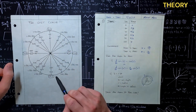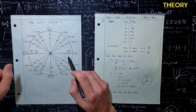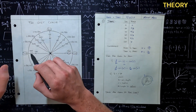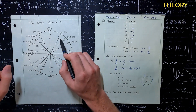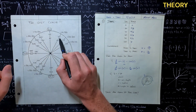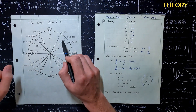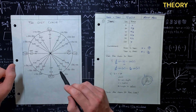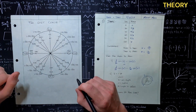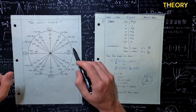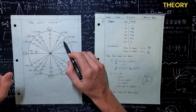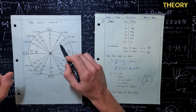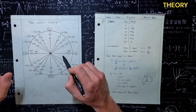So at 90 degrees, we're going to have pi over 2. If we split it up into thirds, we're going to have 60, 120, and 180. So we would have pi over 3 — we're just dividing pi by 3.